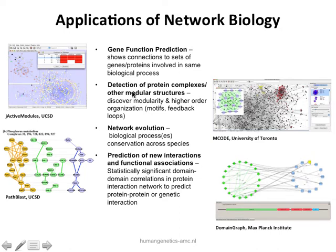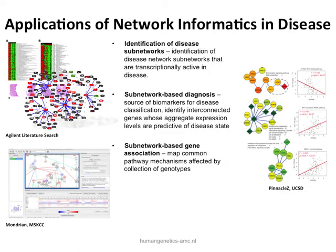Gene function prediction, which we'll hear about tomorrow, is based on network analysis. Clustering networks can be used to find protein complexes in protein interaction networks. Other applications include looking at network evolution and predicting new interactions.